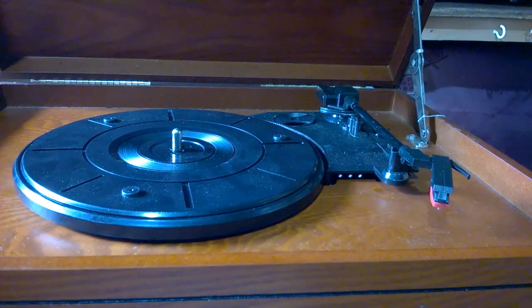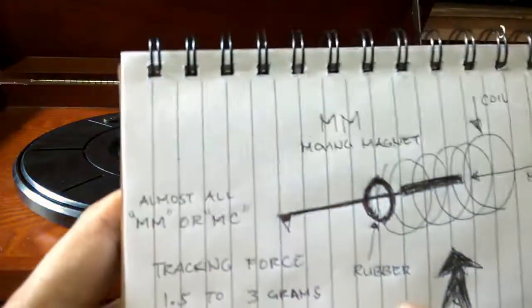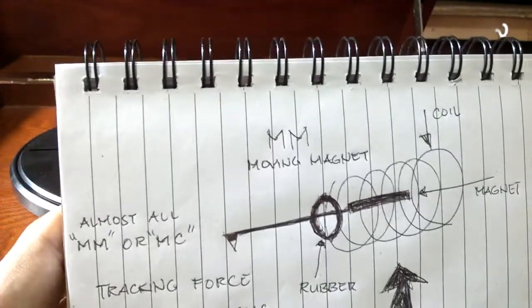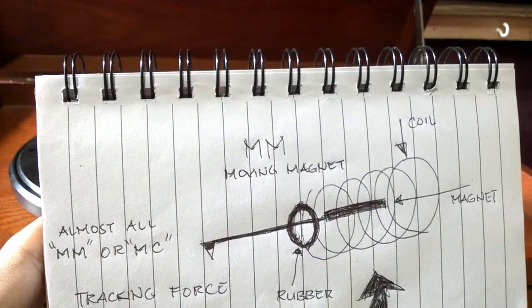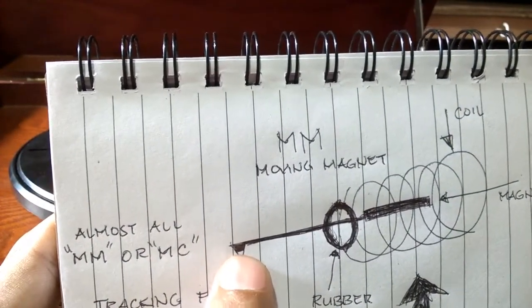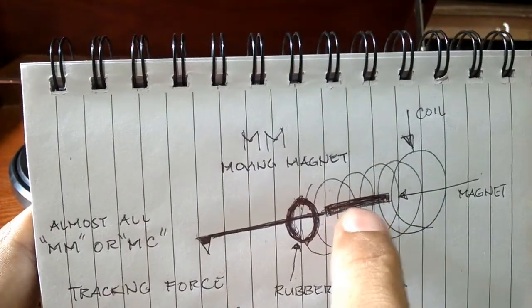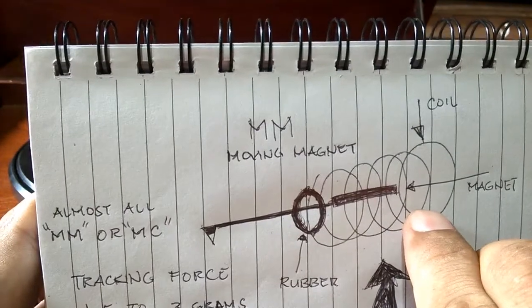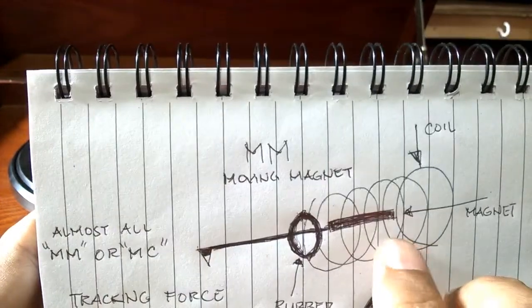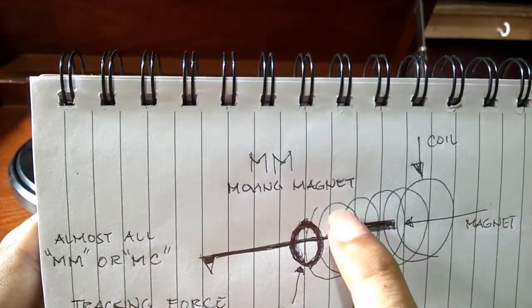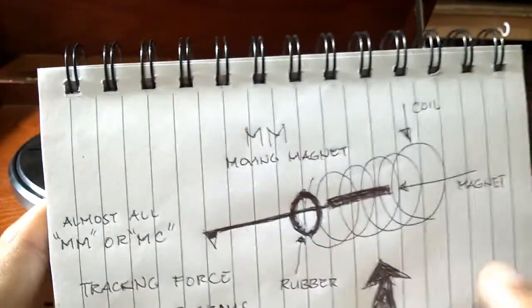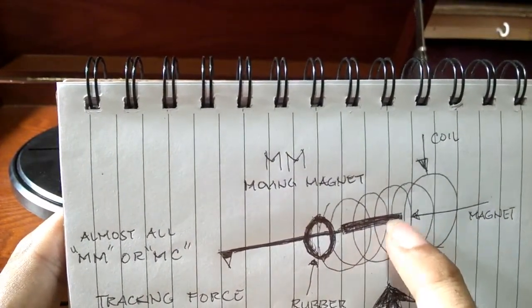My explanation to that is this counterweight is only to align your magnet or the coil inside the cartridge. That is the main thing about counterweight. This is a moving magnet, this is the stylus tip. If your counterweight is very heavy, this magnet here is aligned, it will go this part here so it will produce a distorted sound. If your counterweight is too light, this moving magnet will be disaligned at this part and it will produce a distorted.